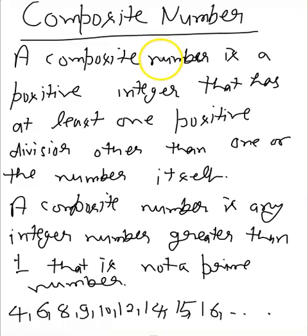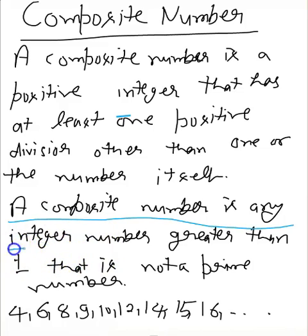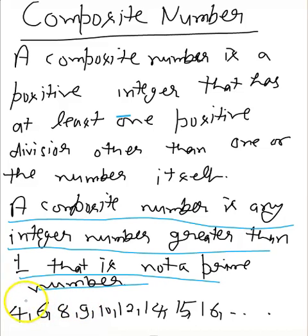What is a composite number? A composite number is just the reverse of a prime number. While prime numbers are divisible only by 1 and themselves, a composite number is a positive integer greater than 1 that can be divided by at least one number other than 1 and itself. Simply put, a composite number is an integer greater than 1 which is not a prime number. For example, 4, 6, 8, 9, 10 are all composite numbers.